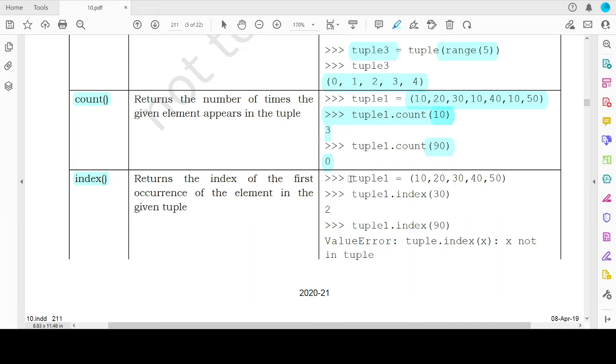So if we have a tuple 10, 20, 30, 40 and 50 and we try to find the index of the value 30, the return value would be 2 because 30 is present at index 2.